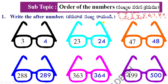What is the number after 23? What is the number after 47? What is the number after 288? What is the number after 363? Answers: 364. 499 — the number after is 500. To find the after number, you should add one. 23 plus 1 is 24. 47 plus 1 is 48. 288 plus 1 is 289. 363 plus 1 is 364.